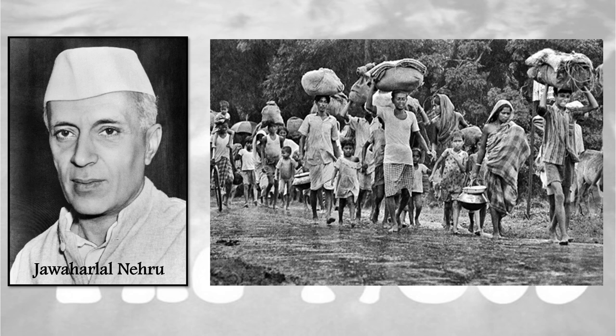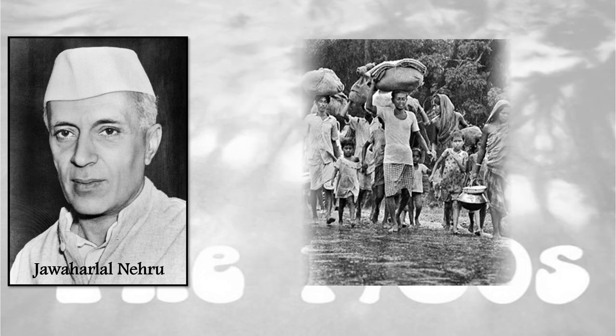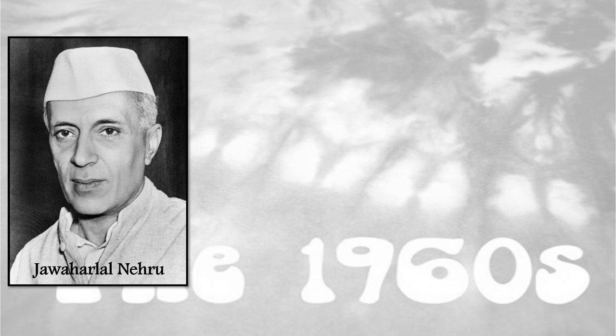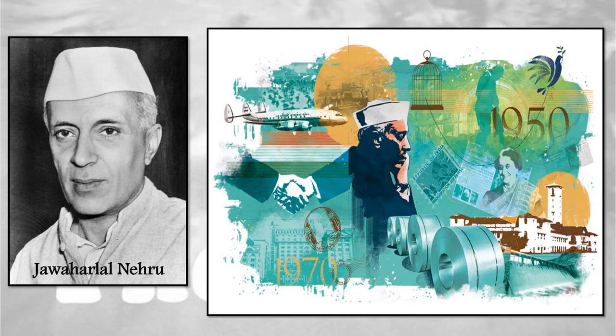Jawaharlal Nehru had inherited a nation of 370 million famished people. The country's economy was in disarray. India's share of the world's wealth had fallen from about 30% in the mid-18th century to less than 3% when the British left the country in 1947. Against this backdrop, Nehru took over the nation with the hope of forging amicable relationships with the countries of the world.